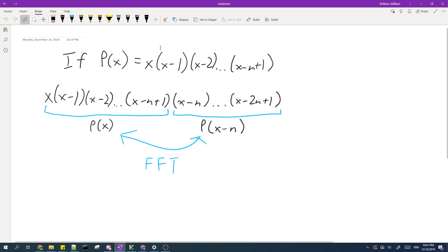So let's say that P(x) is equal to the product of these terms, then we can find a bigger product by using P(x) and the translation of P(x). Once we have these two, then we can use FFT to multiply them together to get the bigger product.